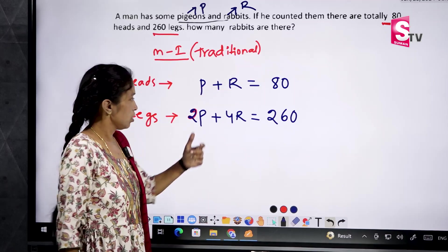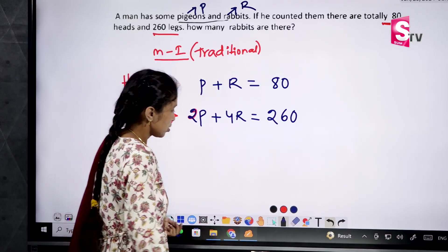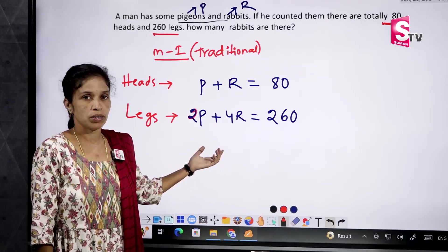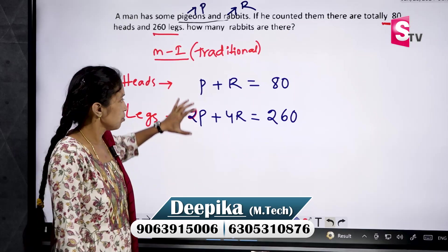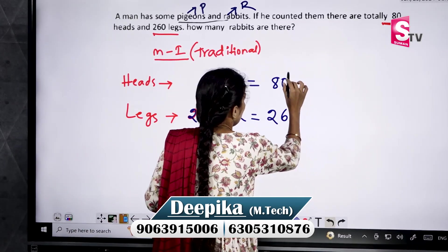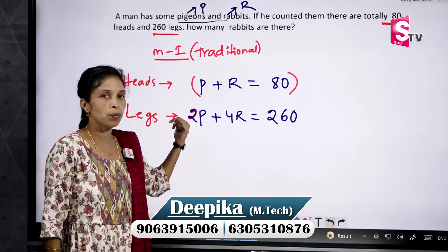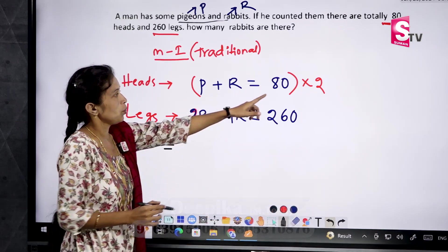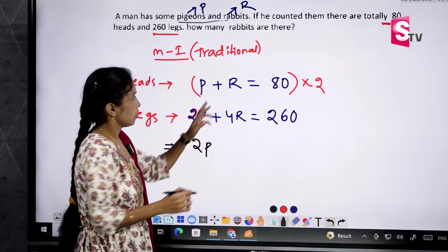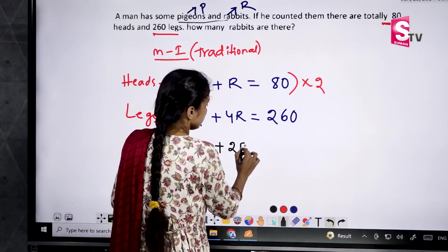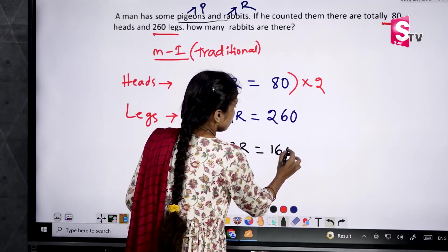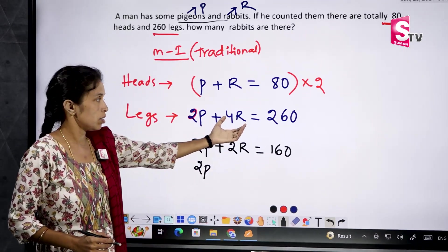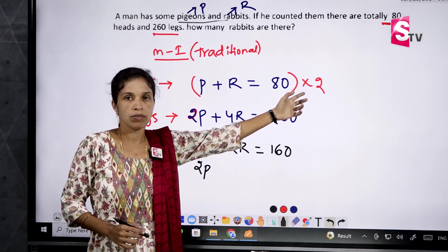From these two equations we have to find the value of R. These are linear equations in two variables. To eliminate P, we multiply equation 1 by 2: P plus R = 8 becomes 2P plus 2R = 16. We keep the second equation, 2P plus 4R = 26, as it is, since we want to remove P.